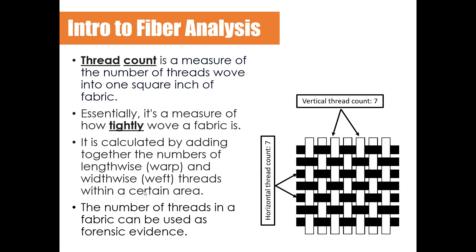In forensics, we can use a quantitative measure called thread count, which is the number of threads woven into one square inch of fabric. It gives us a starting point in fiber analysis. Thread count is calculated by adding together the number of warp threads and weft threads within a given area. For example, in this image the vertical thread count is seven and the horizontal thread count is also seven — though these numbers are not always the same.